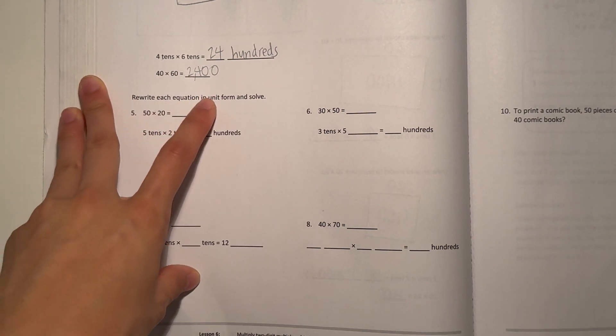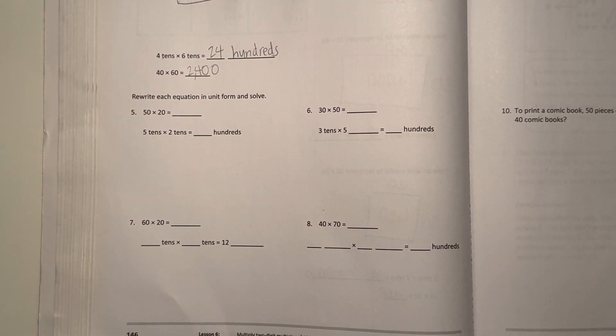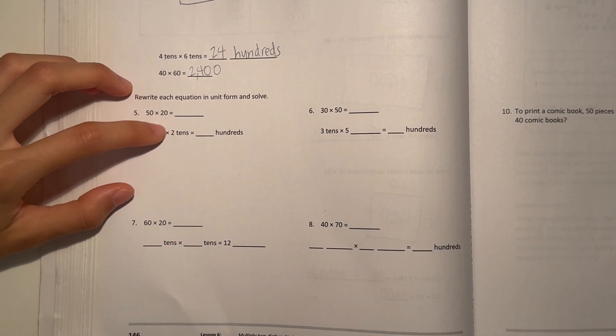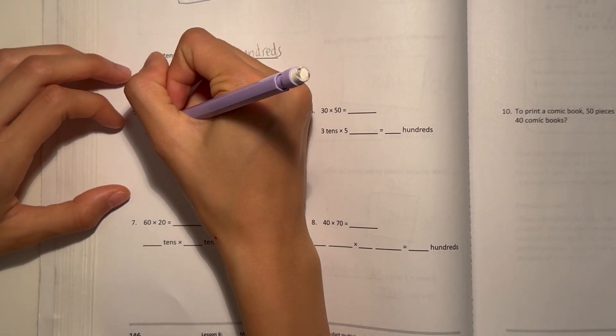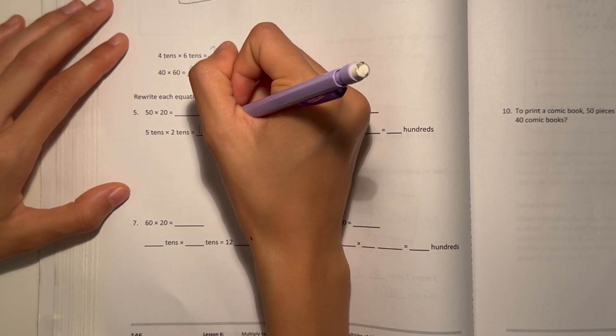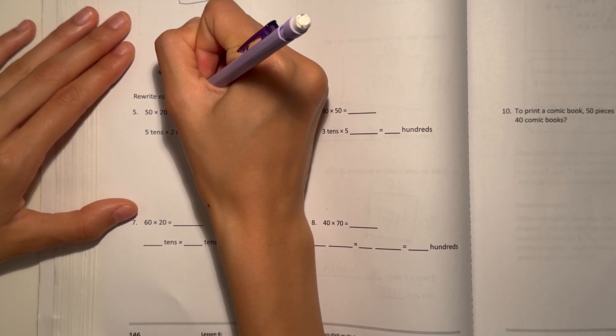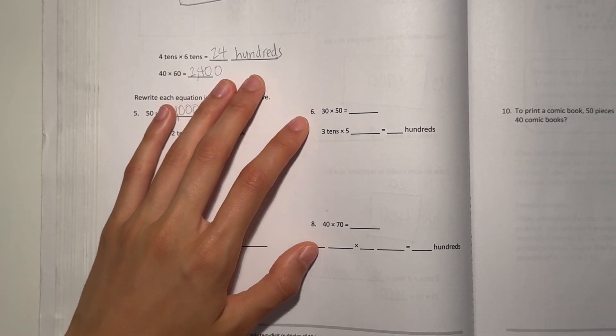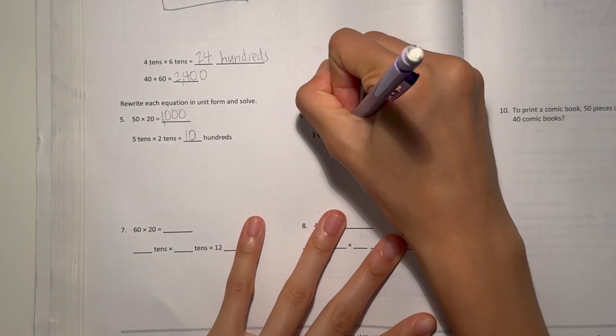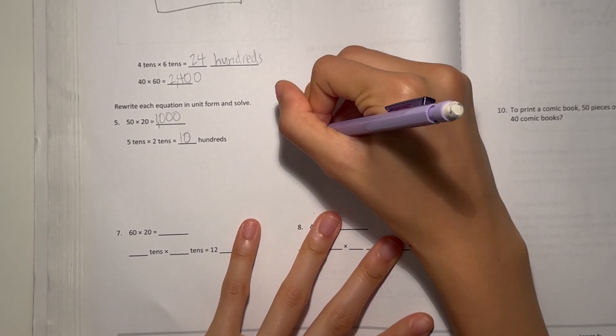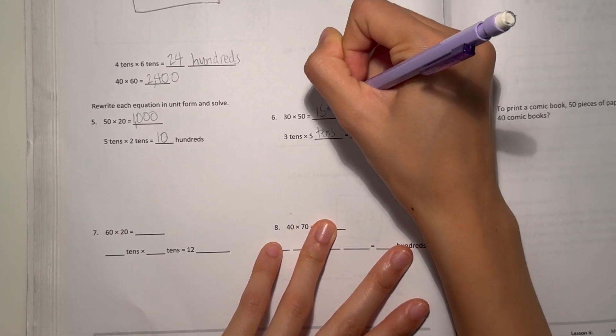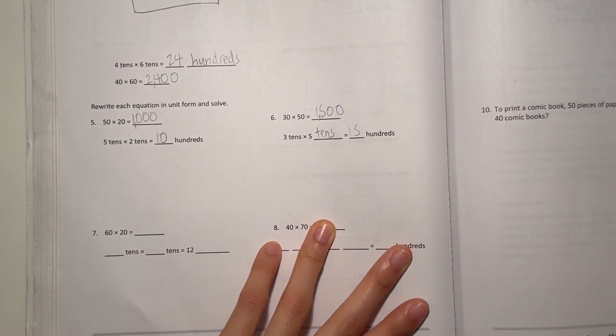Rewrite each equation in unit form and solve. Number five, 50 times 20. So think of it as 5 tens times 2 tens. 5 times 2 is 10, and 10 times 10 is 100, so we have 10 hundreds, that's 1,000. Number six, 30 times 50. That's 3 tens times 5 tens equals 15 hundreds. Just write 15 and add the two zeros at the end. So the answer is 1,500.